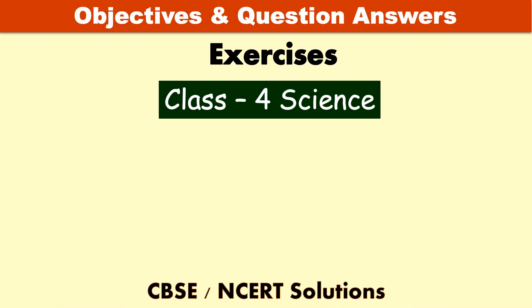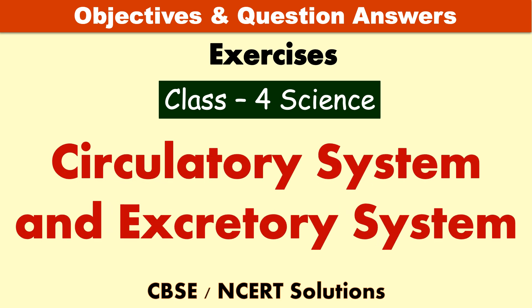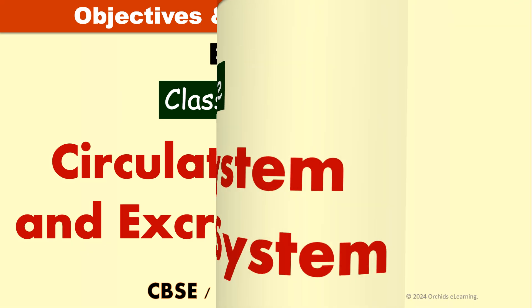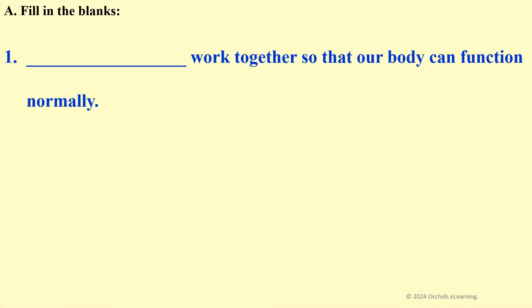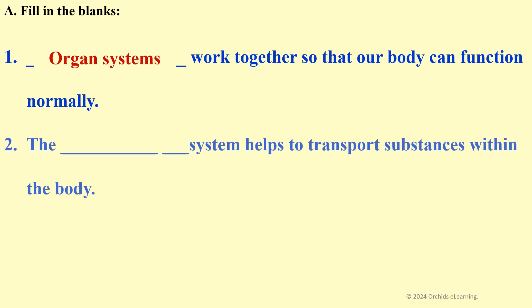Objectives and question answers on the lesson: Circulatory System and Excretory System, Grade 4 Science. Fill in the blanks: organ systems work together so that our body can function normally. The dash system helps to transport substances within the body — circulatory.